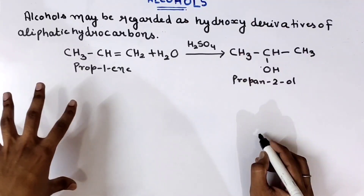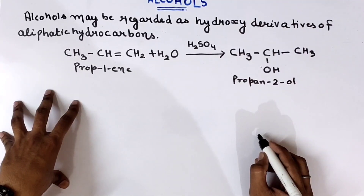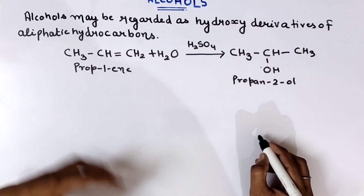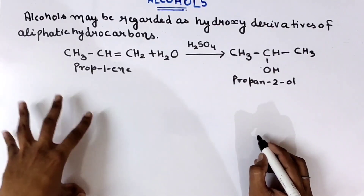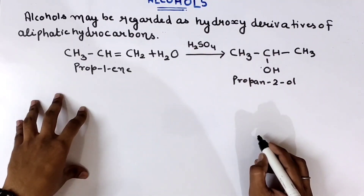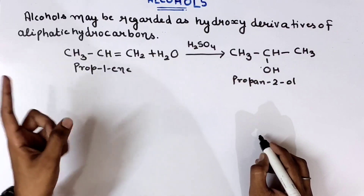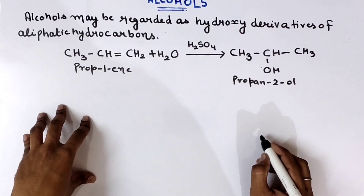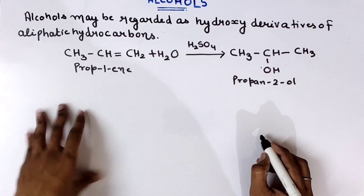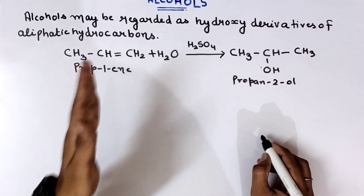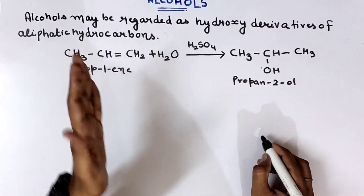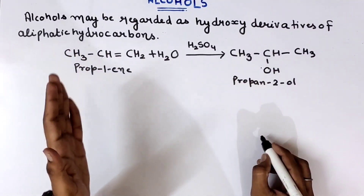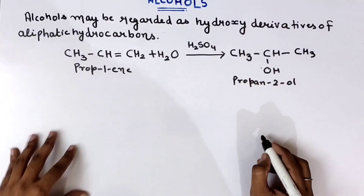Now, depending on how many OH groups are present in a molecule, we further classify alcohols. If one OH group is present in the molecule, it is a monohydric alcohol. If two OH groups are present, it is a dihydric alcohol. If three OH groups are present, it is a trihydric alcohol. And if more than three, we call them polyhydric alcohols.